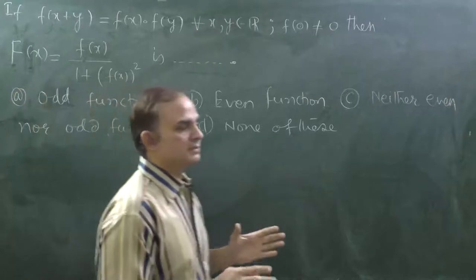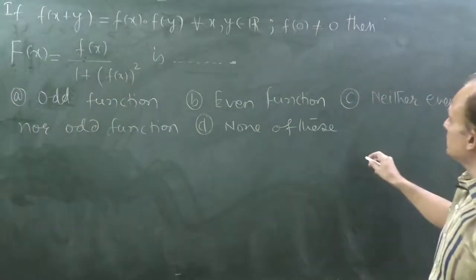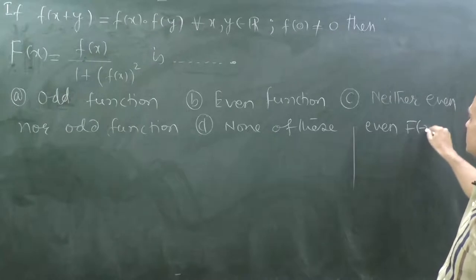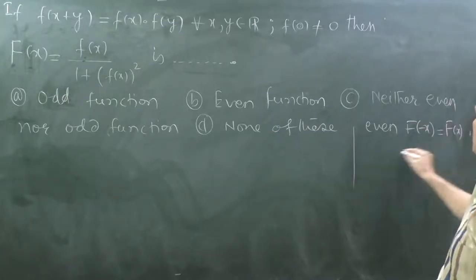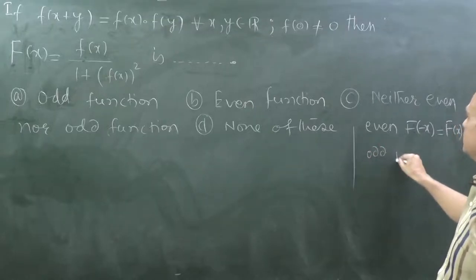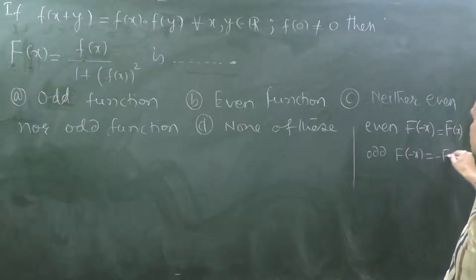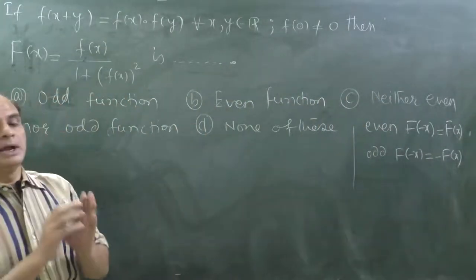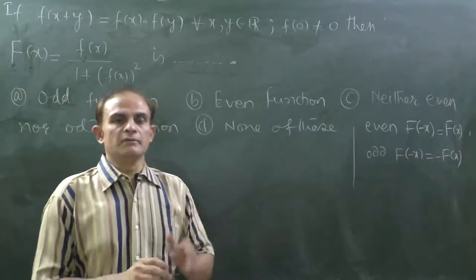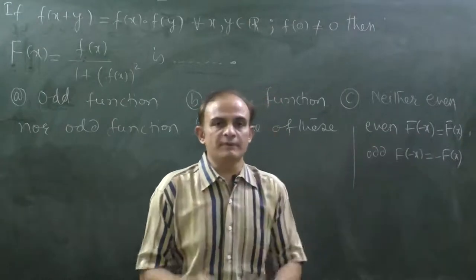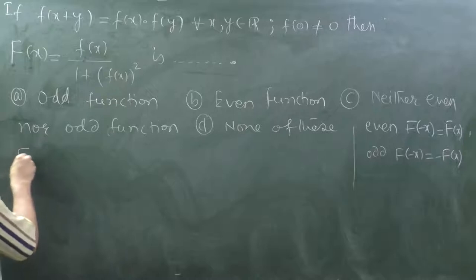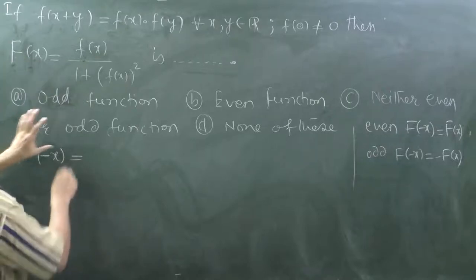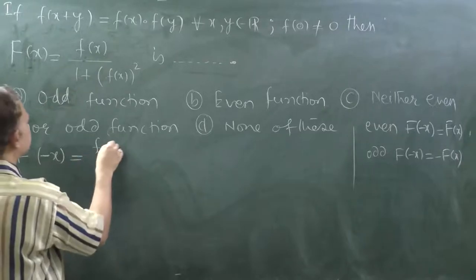Is capital F(x) an even function, an odd function, neither of them, or can nothing be said? We know a function is even when F(-x) = F(x), and it is odd when F(-x) = -F(x). For both cases we need to evaluate F(-x), so let's begin by replacing x with -x.